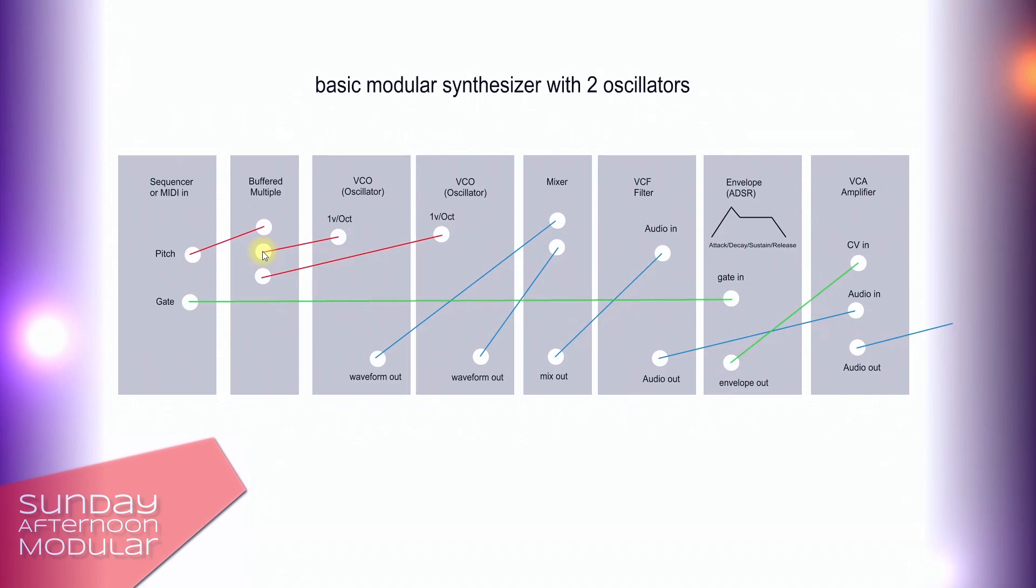Multiples just copy a signal from an input to many outputs. A buffered multiple on the contrary to passive multiples needs power. In this case a buffered multiple is preferred because there is no loss of the level of the pitch signal.